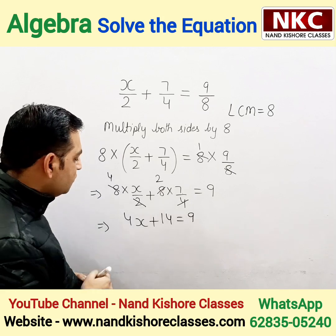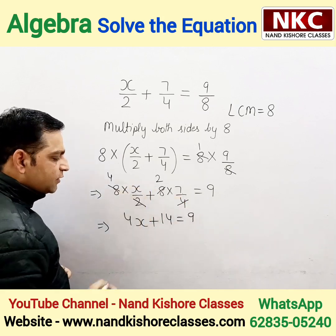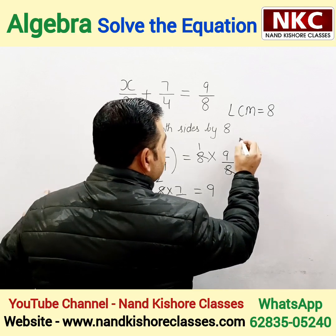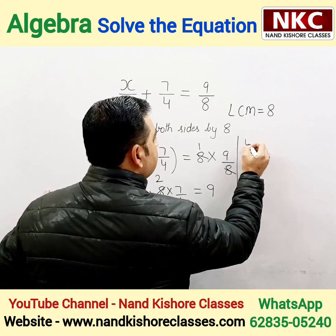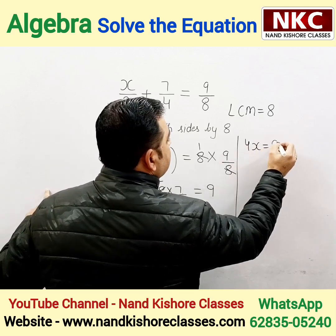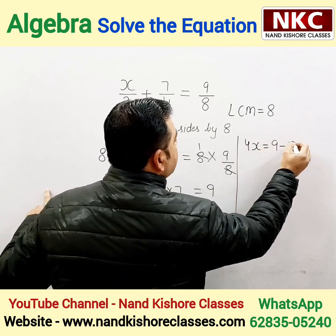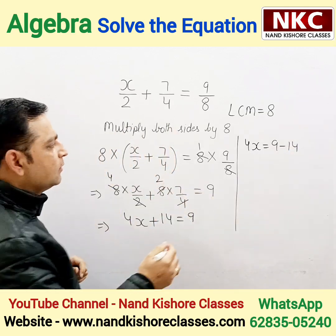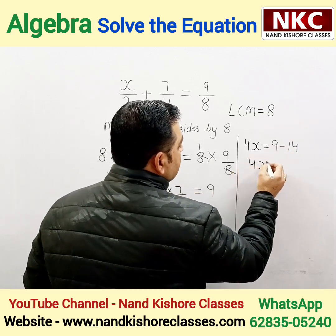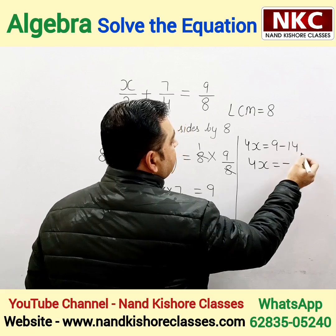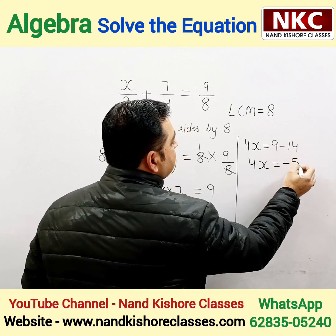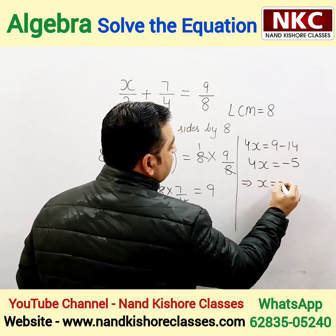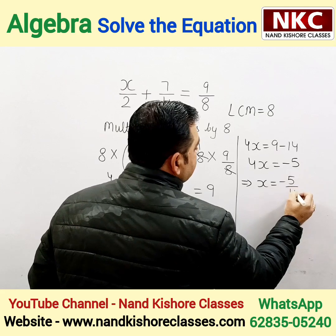Now bring 14 to the right side — that is quite okay, not a problem. So 4X becomes equal to 9 minus 14 when 14 goes to the other side. That gives us 9 minus 14 equals minus 5. And finally, X equals minus 5 by 4.